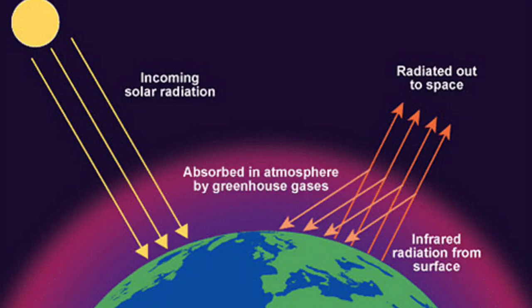The temperature remains the same because the net heat received by the Earth and the atmosphere is completely returned back to outer space. The amount of heat and energy received by the Earth from the Sun is ultimately returned back to space in different ways, so there is no net increase or decrease in the Earth's temperature. This balance between the incoming solar radiation and outgoing terrestrial radiation is called the heat budget of the Earth.